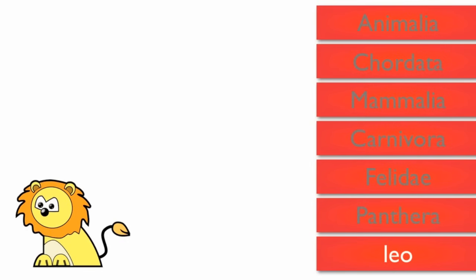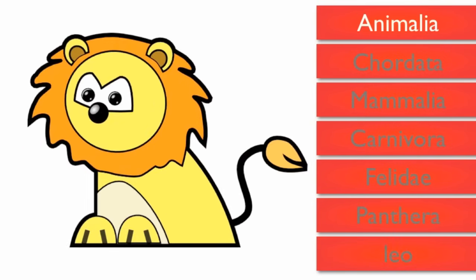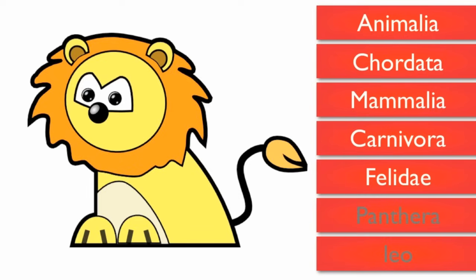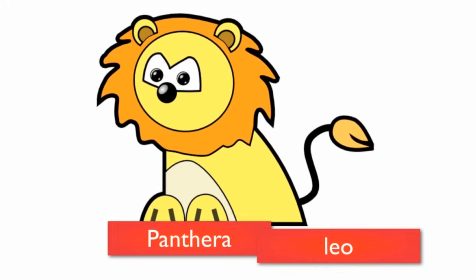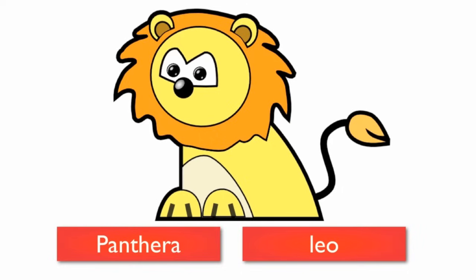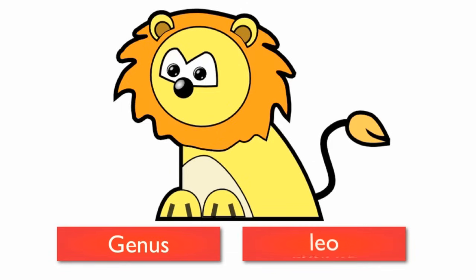So a lion is an animal with a backbone that has hair or fur, eats meat, has retractable claws, can roar, and goes by the name Leo. The lion's scientific name is Panthera Leo. Scientific names are an organism's genus followed by its species, so a lion is Panthera Leo.